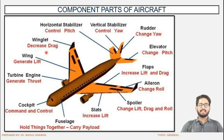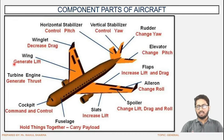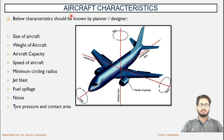Next is the winglet, which reduces excessive drag — the force that is not needed by the aircraft. Wings generate lift which is needed for beginning the operation. The turbine engine generates thrust — the force to give movement. Thrust is applied and in the opposite direction the movement of the aircraft takes place. These are the various components of the aircraft along with their functions.